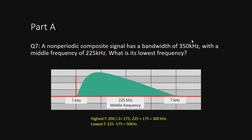The bandwidth is 350 kilohertz and the middle frequency is 225 kilohertz — both in kilohertz, so no conversion needed. The question asks for the lowest frequency. From question 3 we know: highest minus lowest equals bandwidth. Here the bandwidth and the middle frequency are both given.